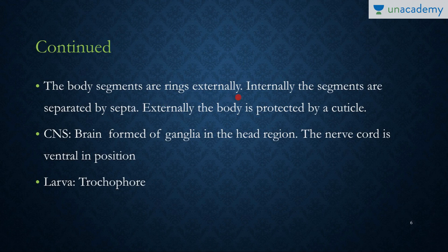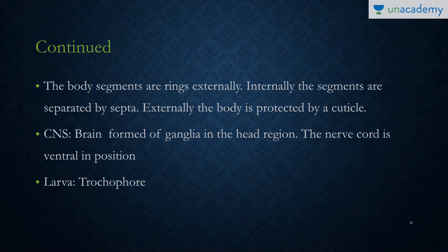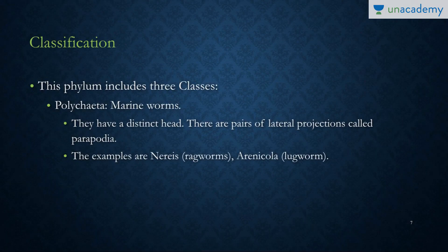The body segments consist of rings externally; internally, the segments are separated by septa. There is an external protective covering known as the cuticle. The central nervous system brain is formed of ganglia in the head region, while the nerve cord is ventral and solid — as is the case with all non-chordates. They have a larva known as the trochophore larva.